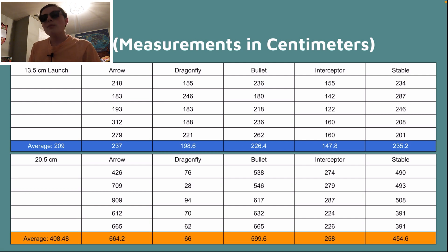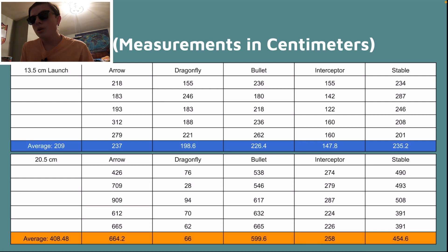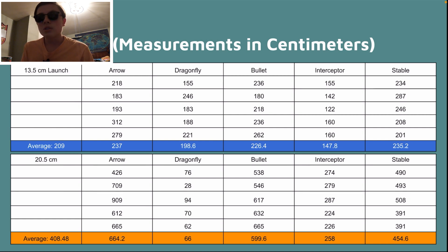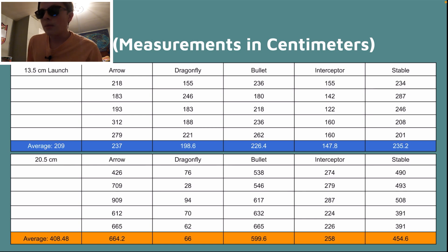Here's the data measurements. The average of all the blue pullback distance was 209 centimeters, and the average of the orange pullback distance was 408.48 centimeters — which is almost double. It's not completely double, but it's close. You can see which ones improved the best and which improved the worst. It's interesting how some of these performed.